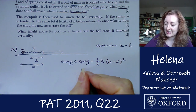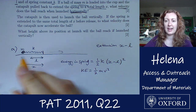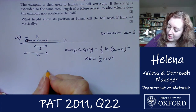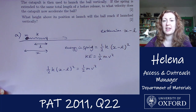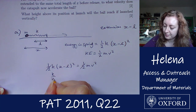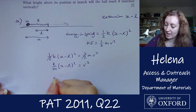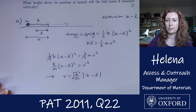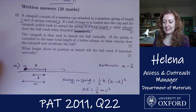That stored energy is going to be turned into kinetic energy, which equals one half m v squared, where m is the mass of the ball. So equating the two: one half k(x minus l) squared equals one half m v squared. Rearranging — dividing through by one half and by m to get v squared, then taking the square root — we get v equals the square root of k over m times the magnitude of (x minus l). That's the velocity when launched horizontally.